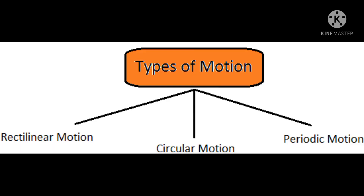Before entering into the concept of types of motion, what do you mean by the word motion? Motion means if an object changes its position with respect to time, we can say that particular object is in motion.